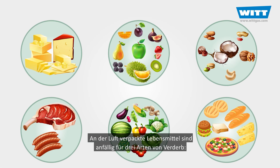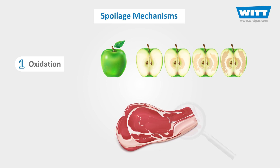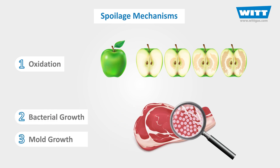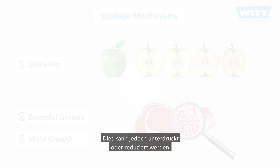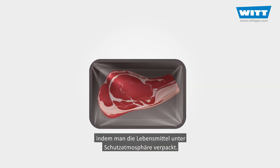When packed in air, food is susceptible to three main spoilage mechanisms: simple oxidation, bacterial growth, and mould growth. However, all of these can be suppressed or reduced by packaging the food in the appropriate modified atmosphere.